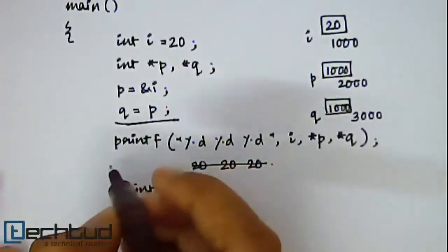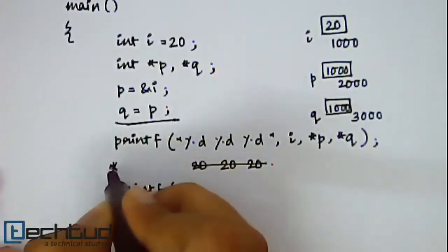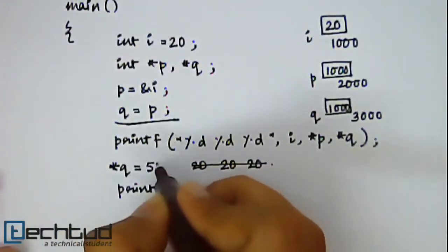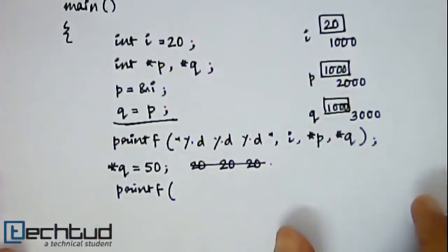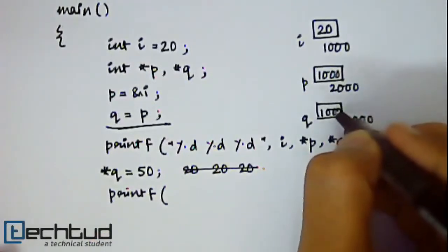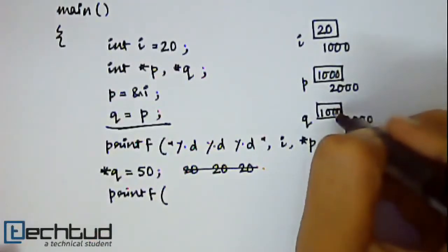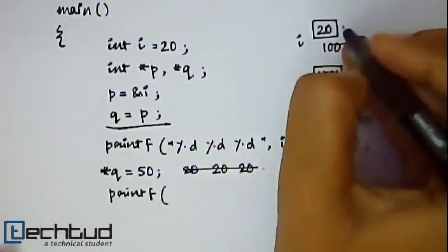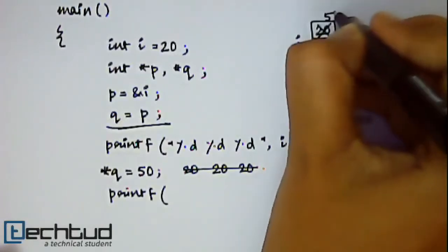Let's say we assign star q as something else, maybe 50. So what will happen? Value of q will be changed. Value of star q means the value inside the memory location which q is storing, so the value of 1000 memory location will be changed to 50.